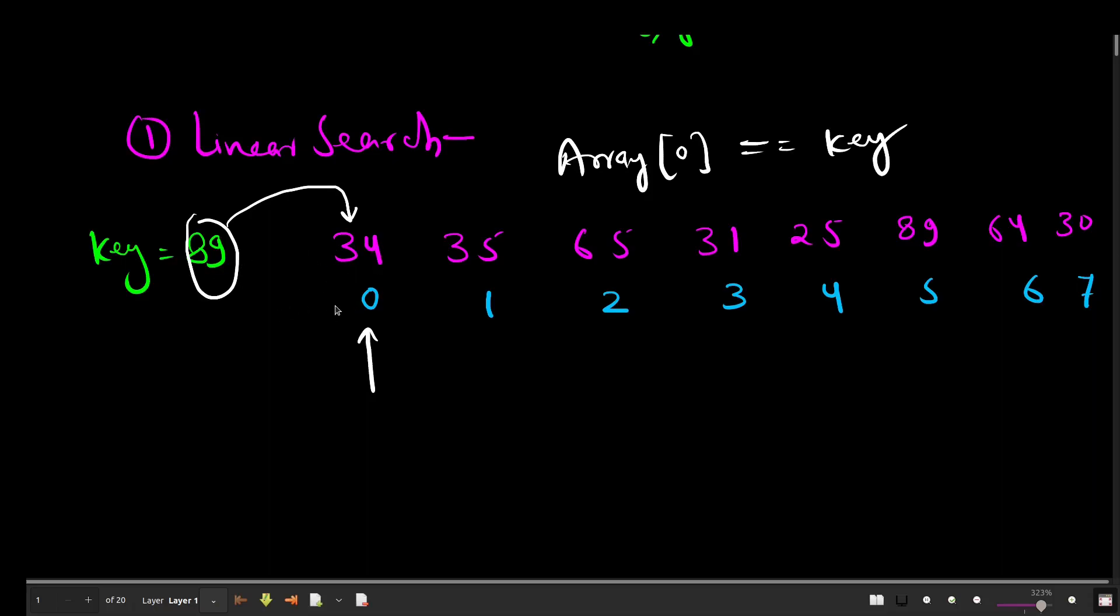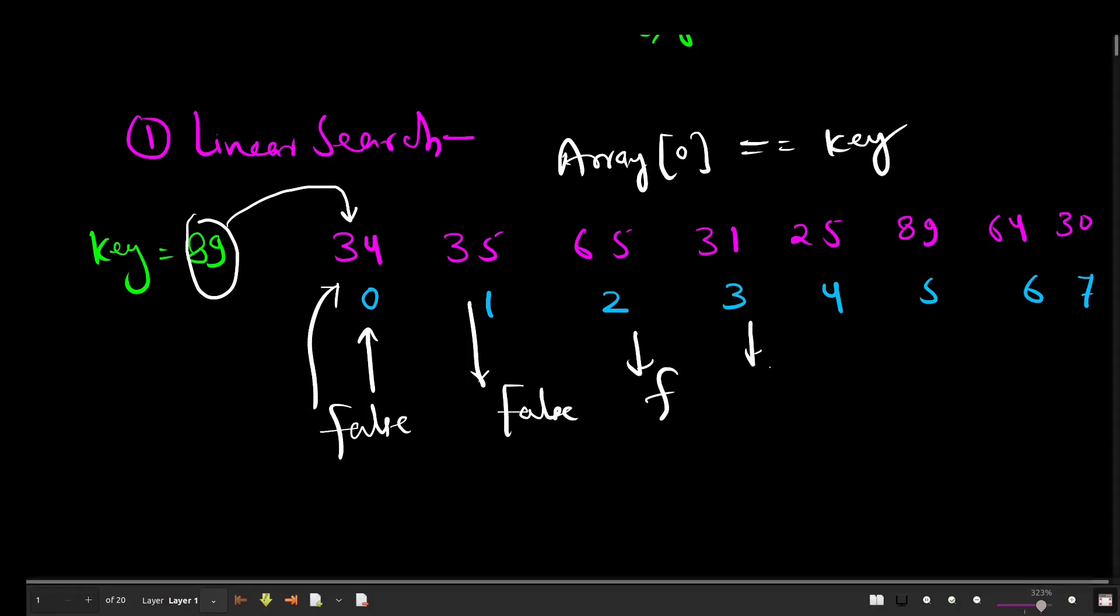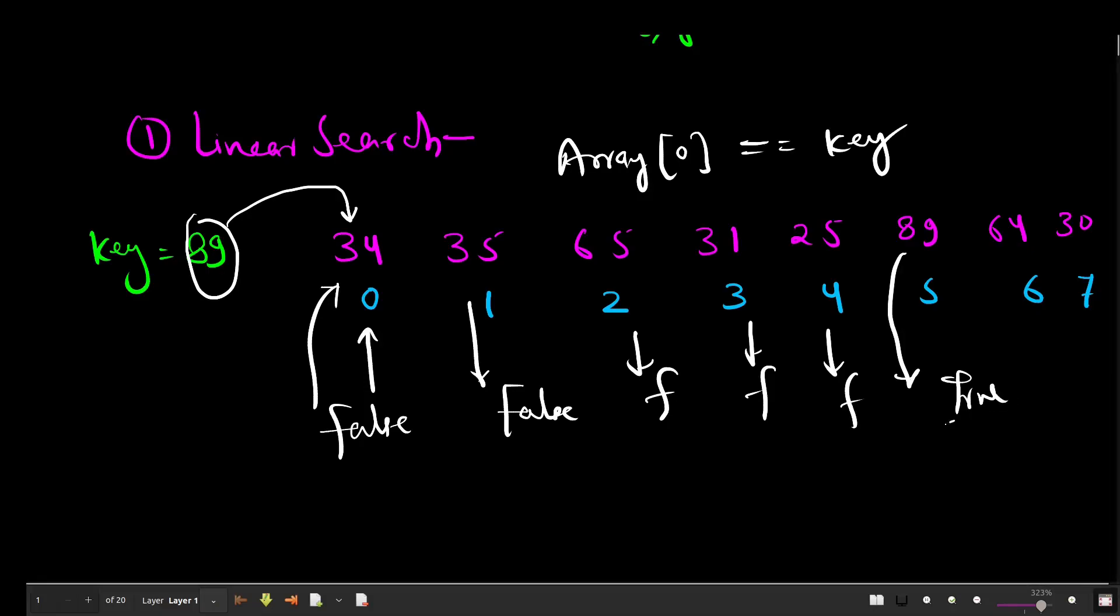First we are going to compare this key element with this element. Suppose this array name is array, so this particular element is at array[0] and then you need to compare this with key element. Once you compare 89 with 34, here the result that you are going to get is false because these elements are not equal. Even in this case you are going to get false, false, false, false, and till now you have done 5 comparisons.